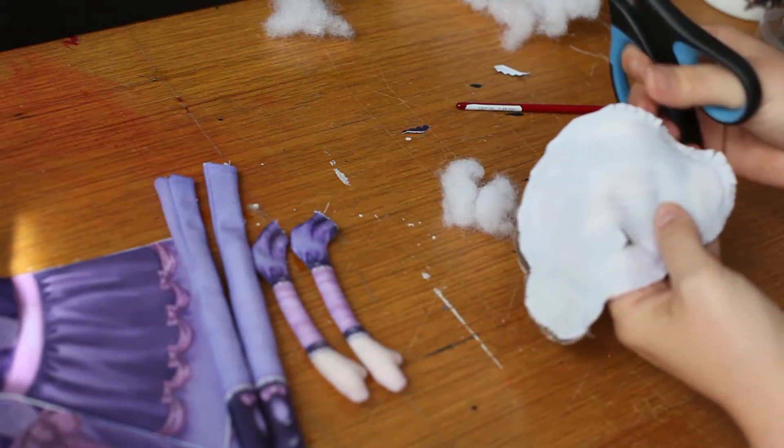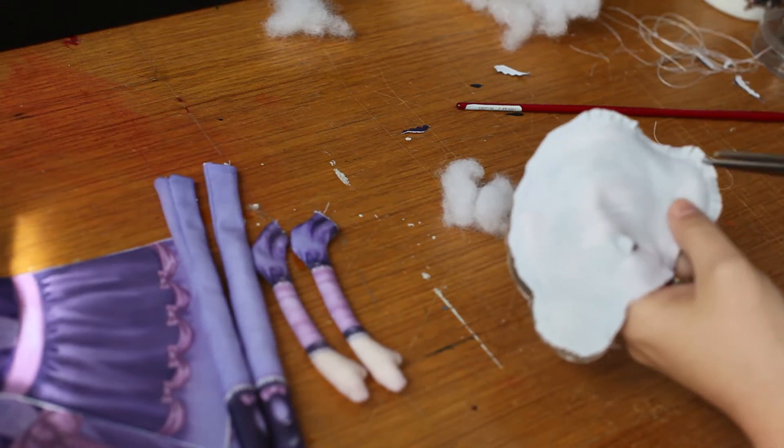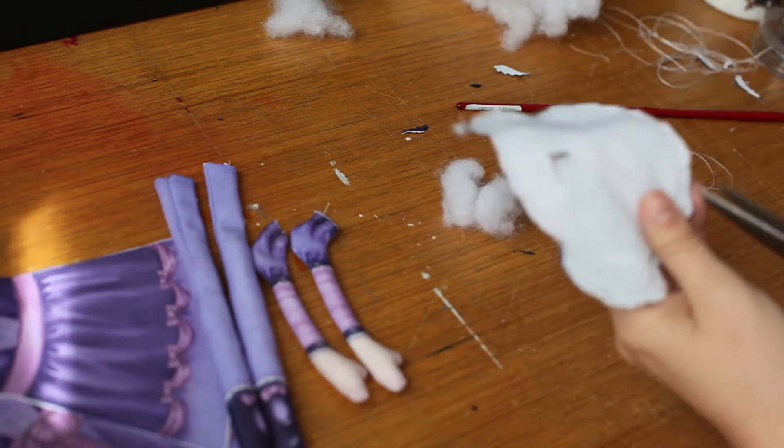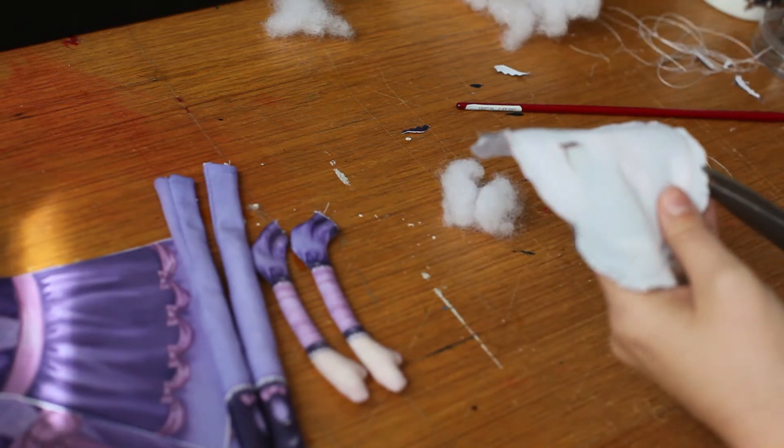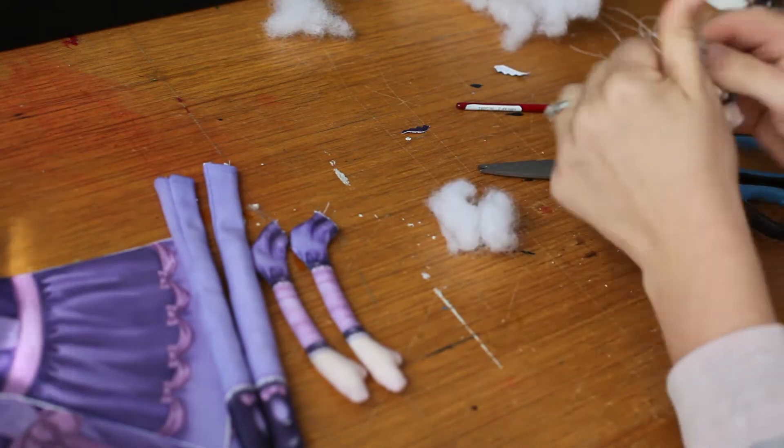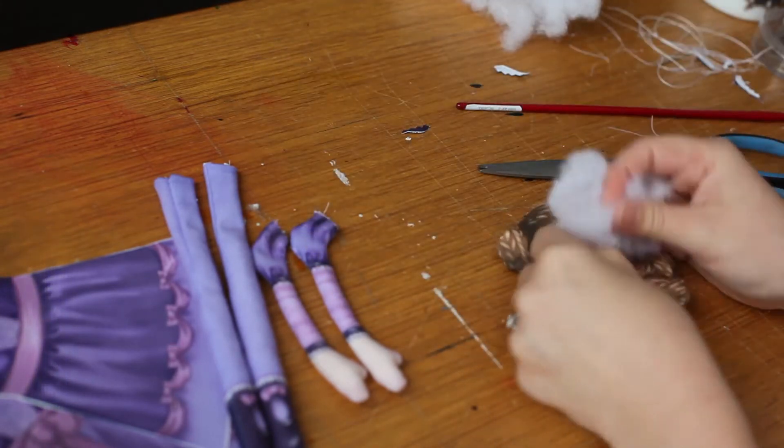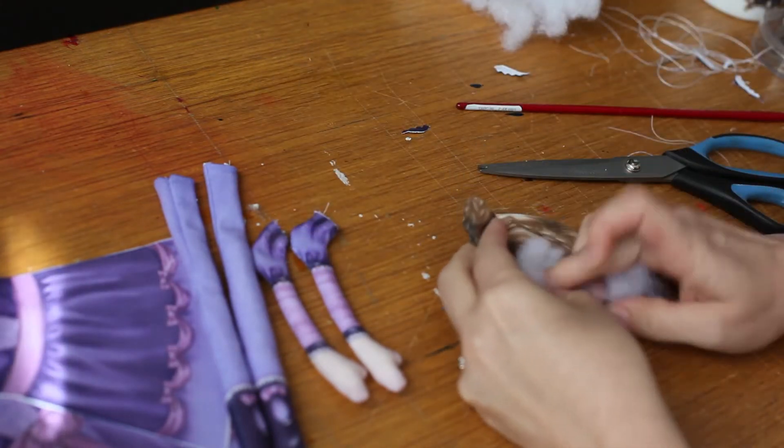Now I've started clipping these edges here. I do lots of little clippings in for the head because I like them to be as smooth as possible. Let's keep going. The head will be fairly easy to stuff with just with your fingers so just start pushing the stuffing in.